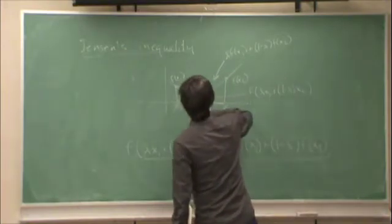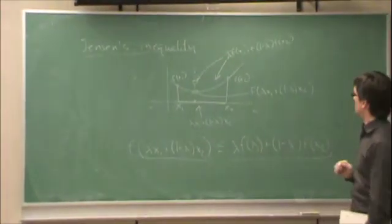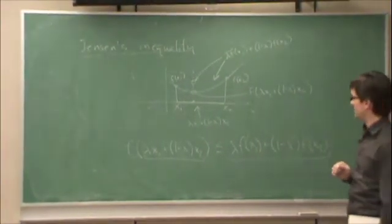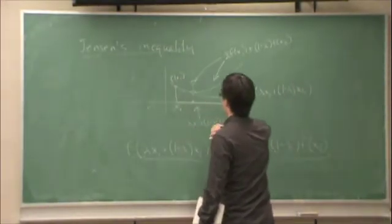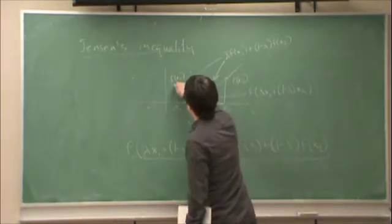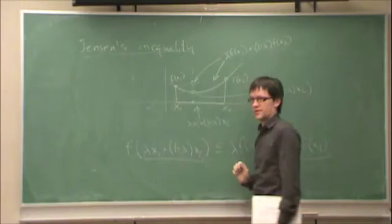This is f of lambda x1 plus 1 minus lambda x2. And this is lambda f(x1) plus 1 minus lambda f(x2). So in other words, if you can think of a convex function as like a closed line, the closed line sags between the two connecting points.